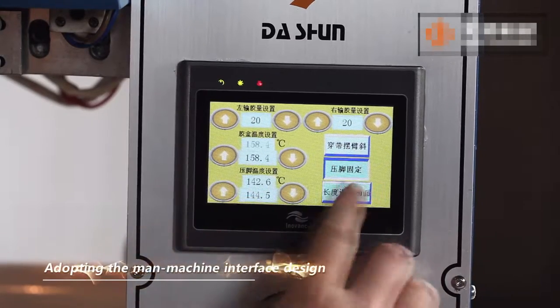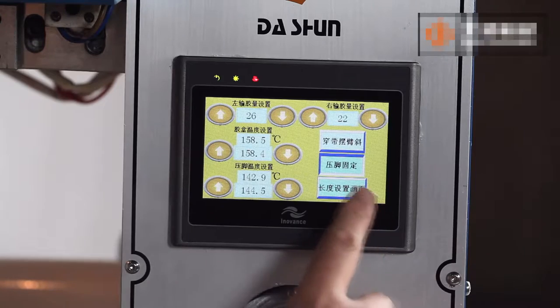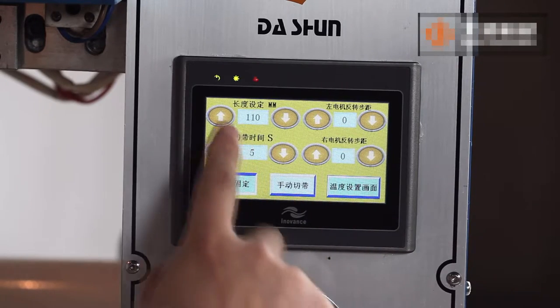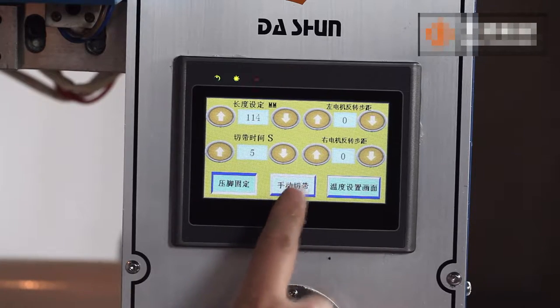Adopting the man-machine interface design, it is easy to operate. The glue amount, strip cutting length, automatic or manual strip cutting, swing or lower arm may be selected on the screen.